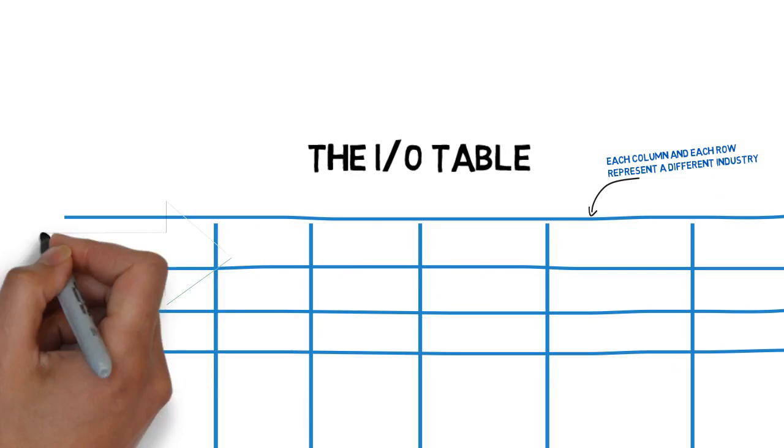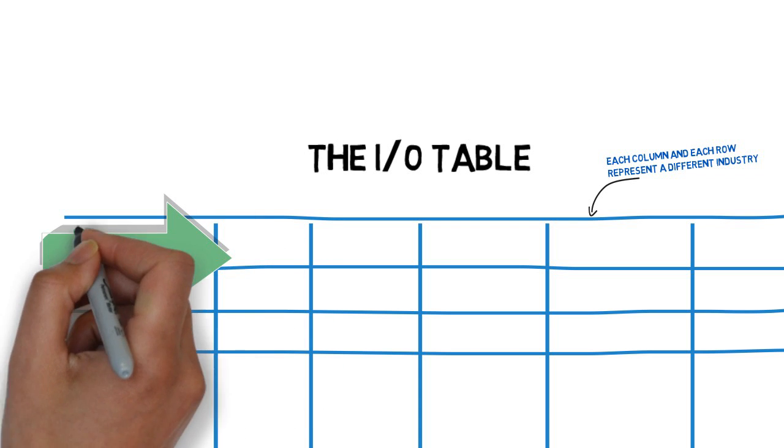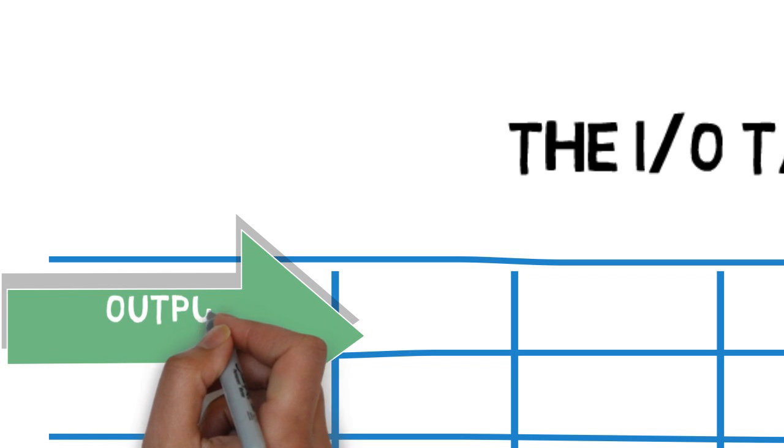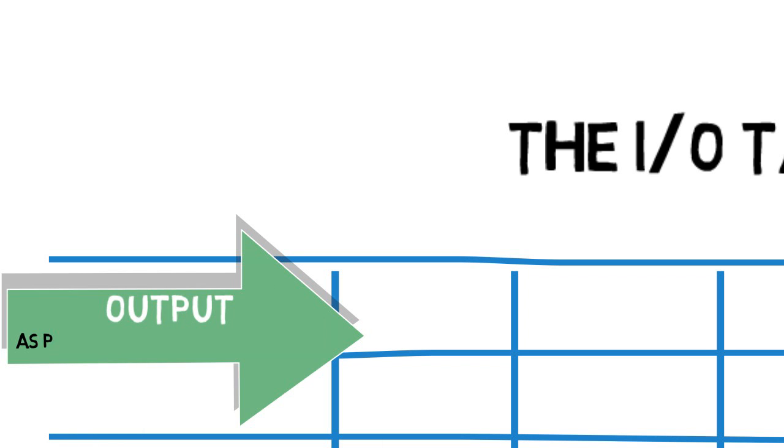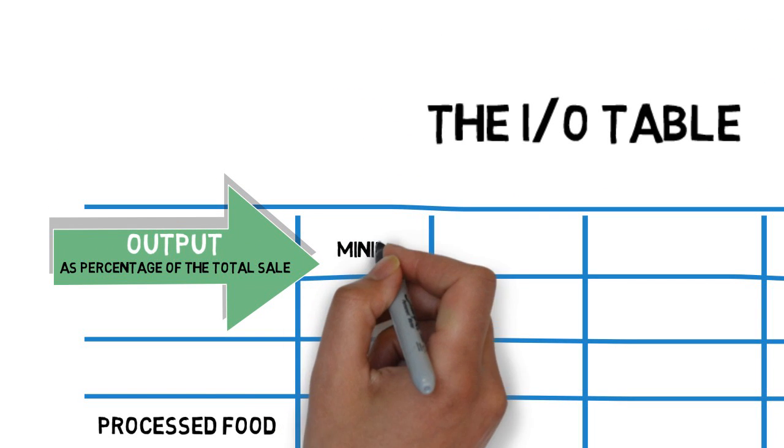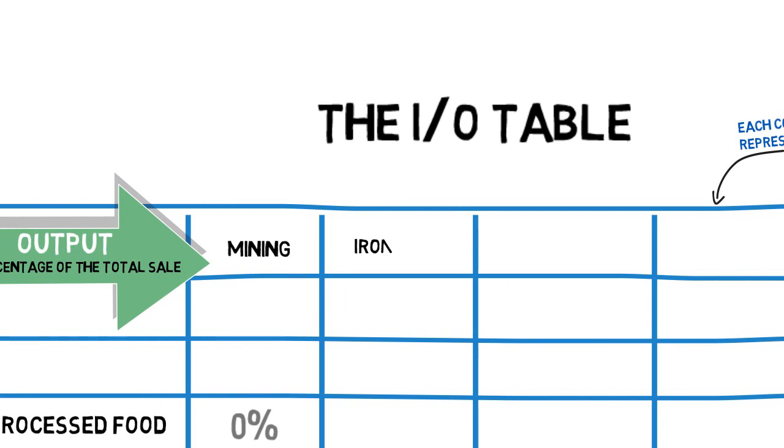As we move across the columns, each cell shows the amount of output from the processed food industry that is bought by each other sector. For simplicity, let's show not the actual value of the transaction, but the value as a percentage of the total sales. Many cells within the matrix will have a zero. We start with the primary industries like mining, which does not use food as an input. Then we go to manufacturing activities, most of which, like iron and steel, don't use food as an input.